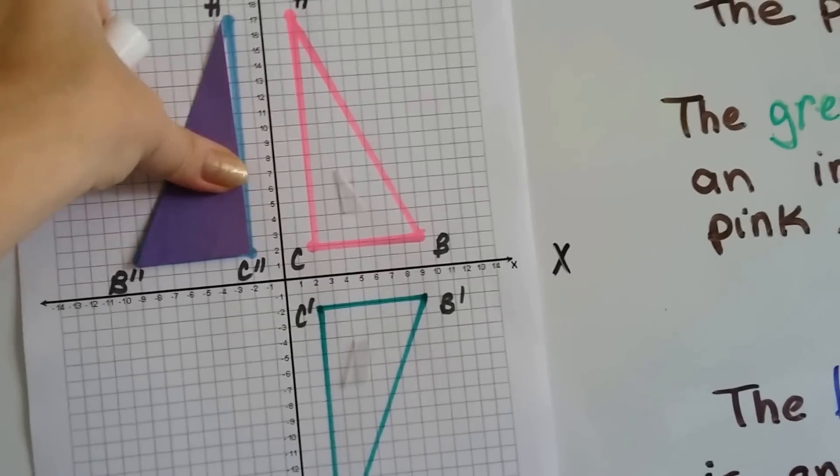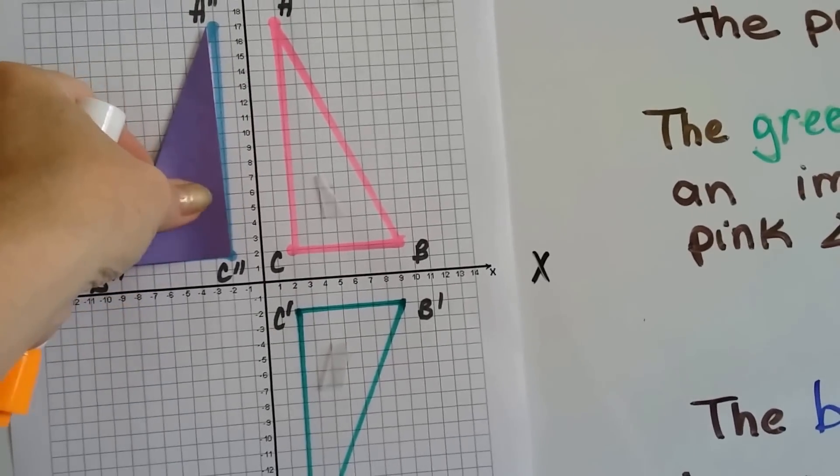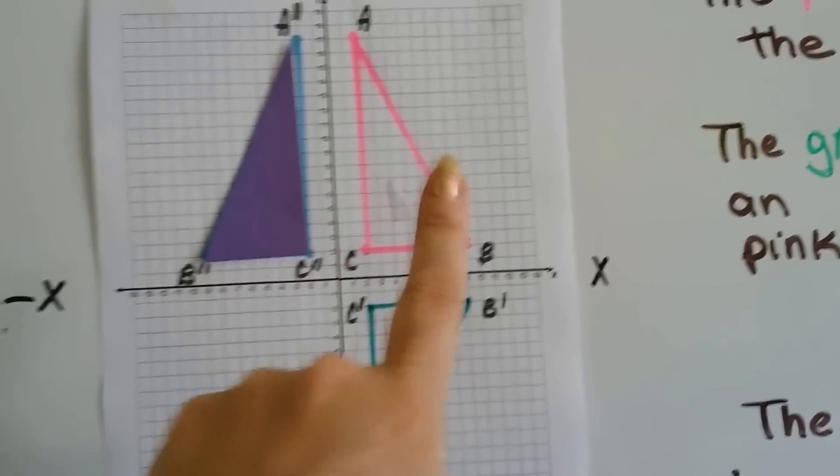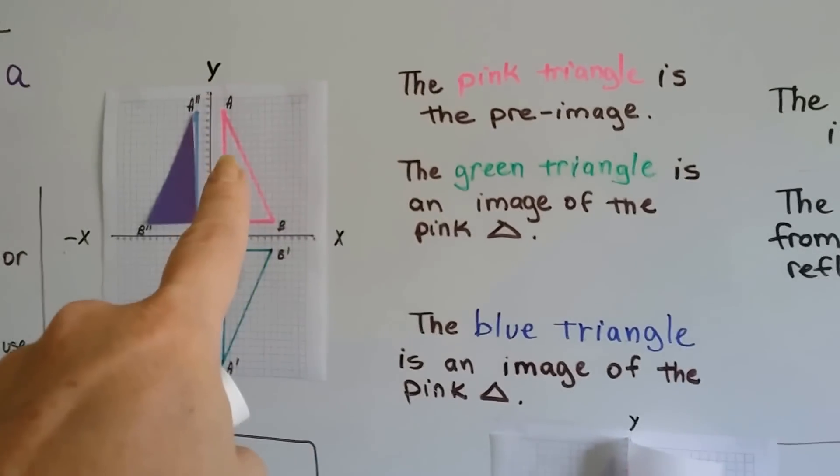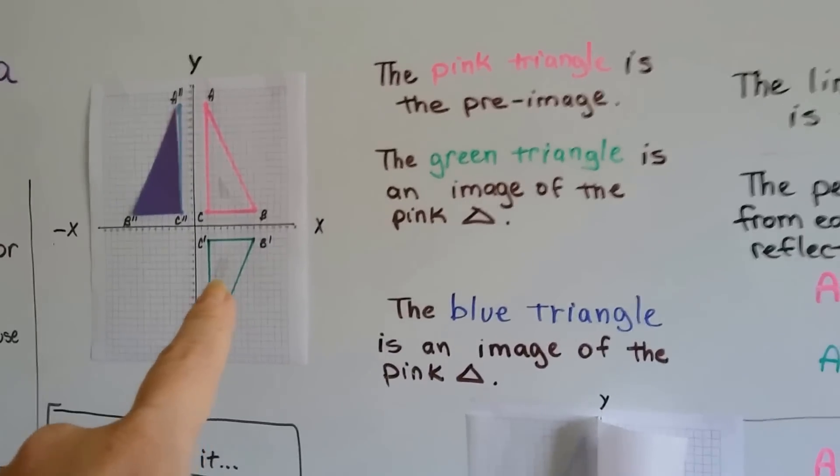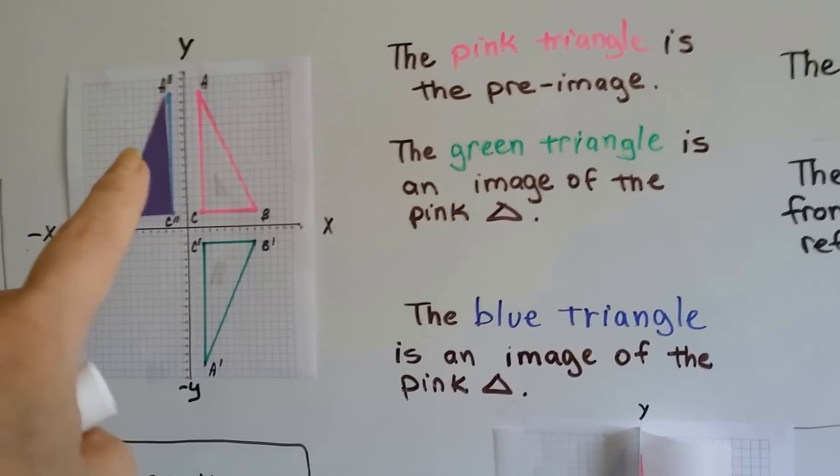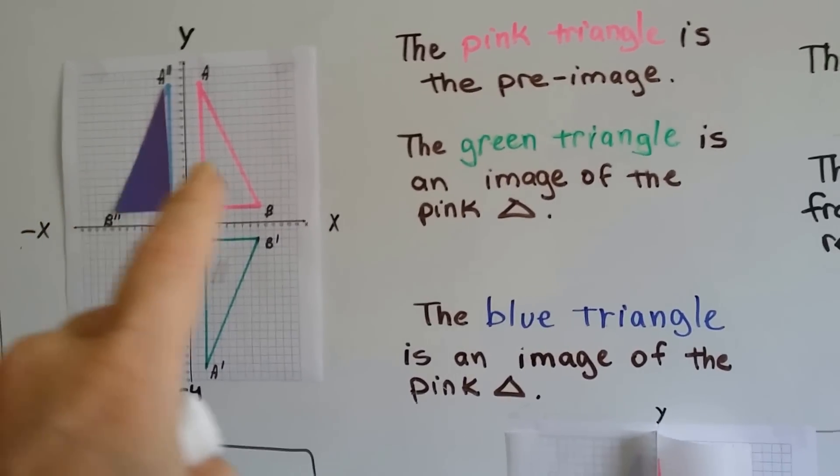It's hard to do it with one hand, and I have a bad arm, unfortunately. So this is the reflection. The pink triangle is the pre-image. The green triangle is the image, it's the reflection. And the blue triangle is also the image, the reflection of the pink one.